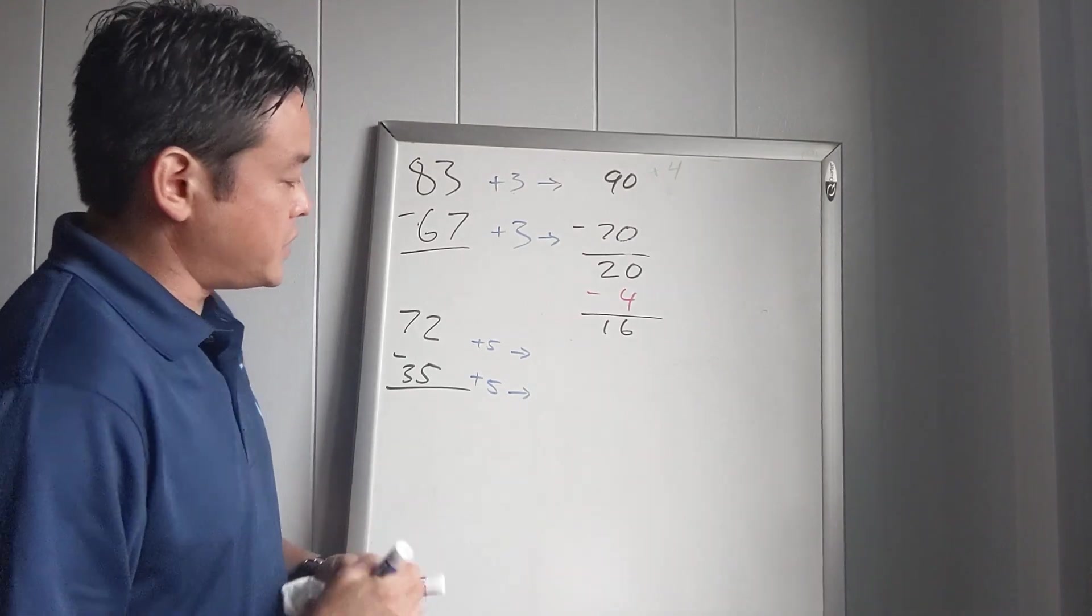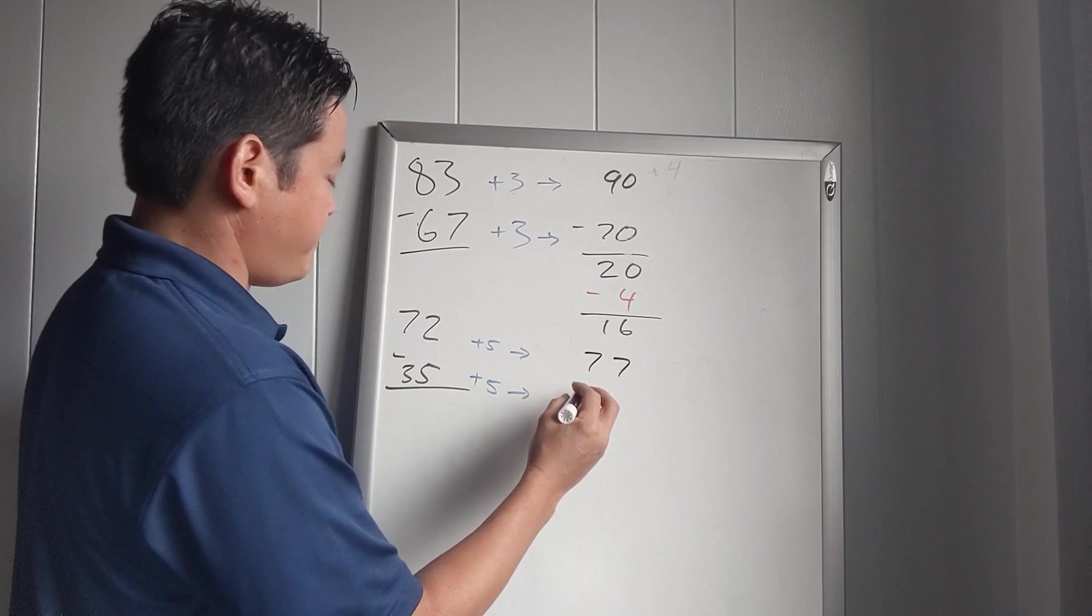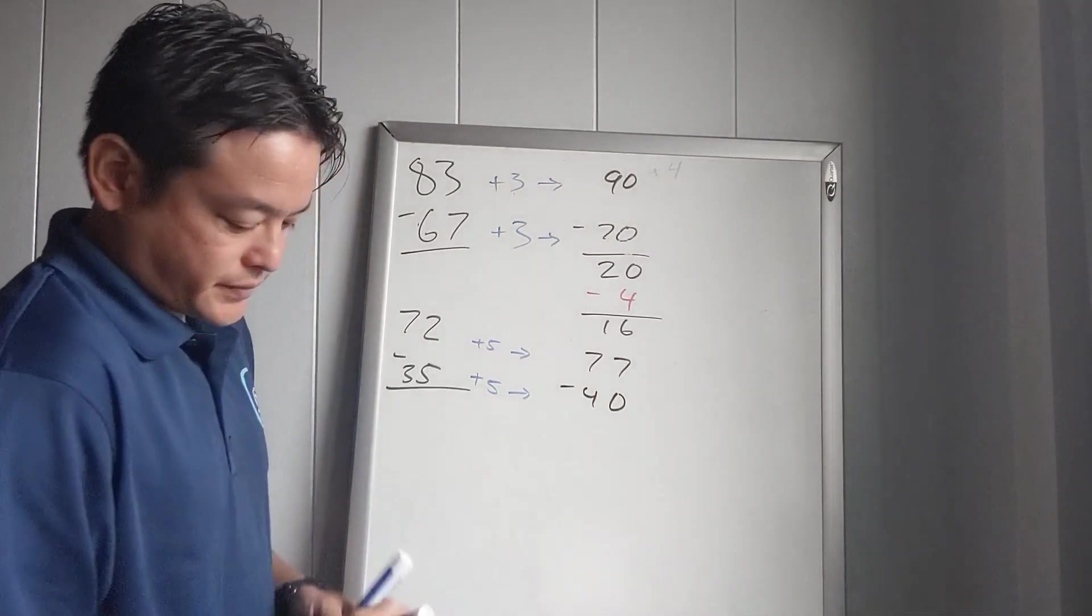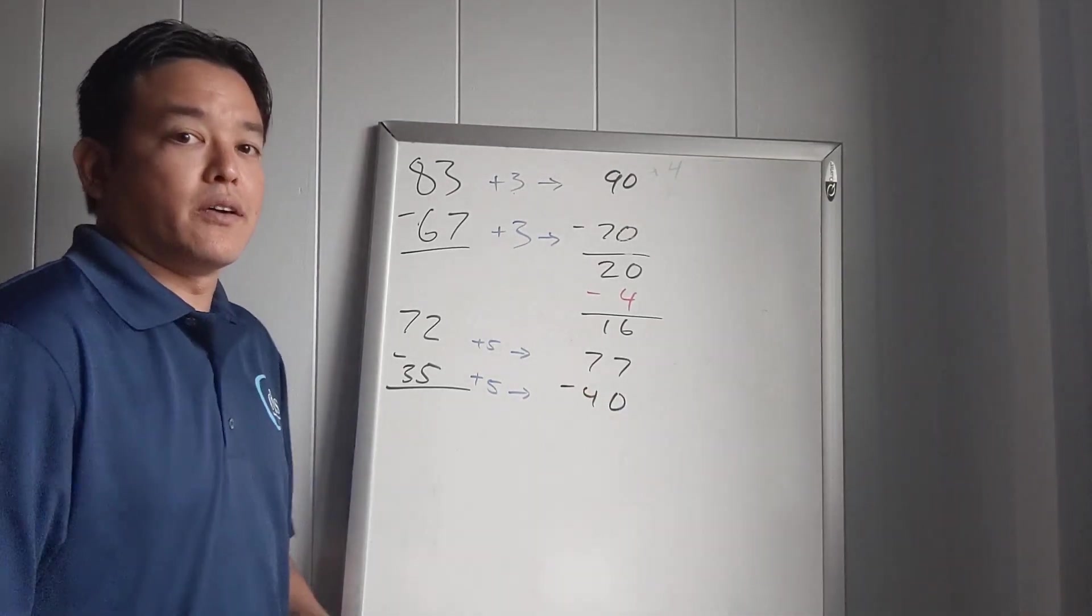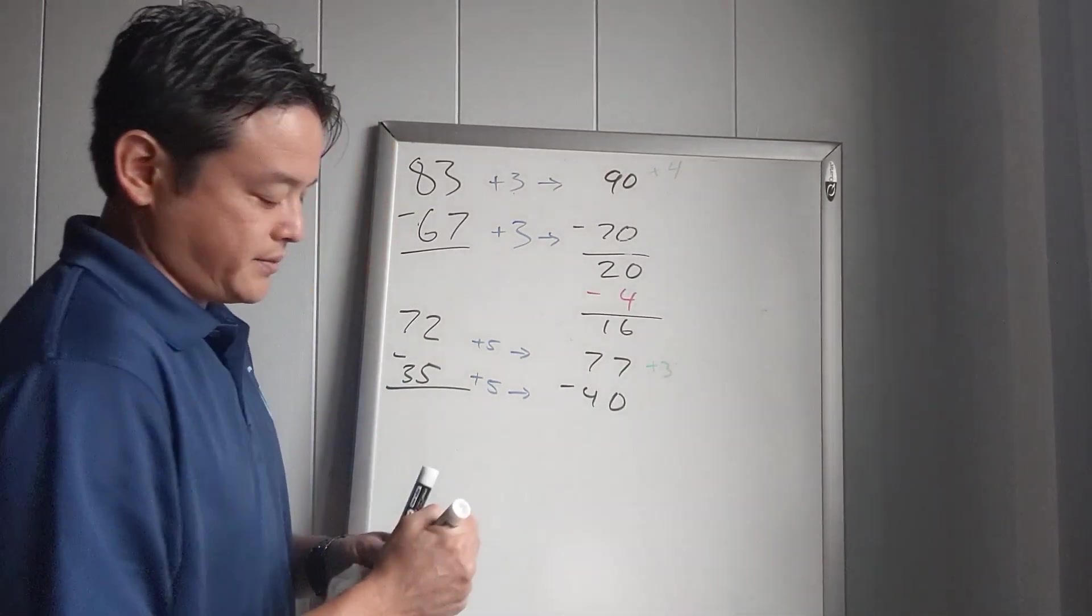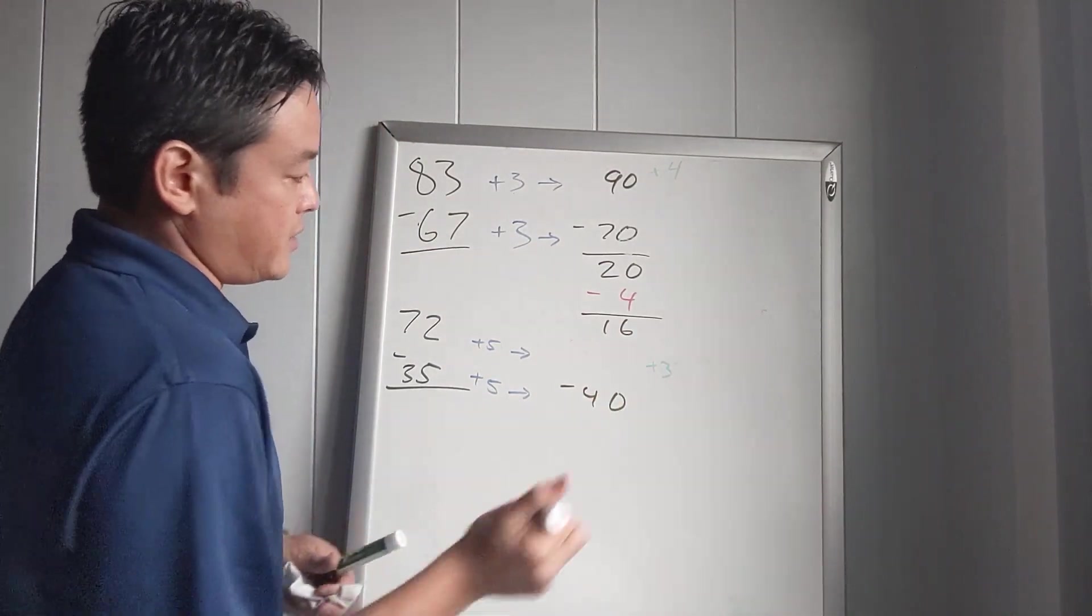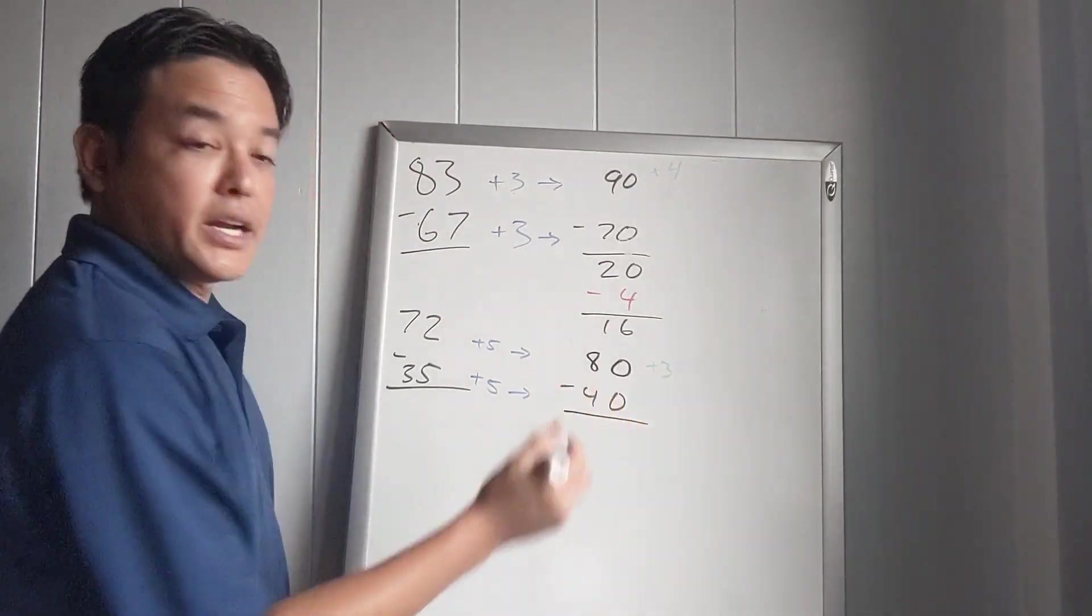What does this turn into? Well, if we add 5 to the bottom, we'll get 77 minus 40. Now we're going to look at this number and say, well, if that was just 80 it would be a lot easier. So we're going to add 3 to get to 80. So we'll change that to 80.